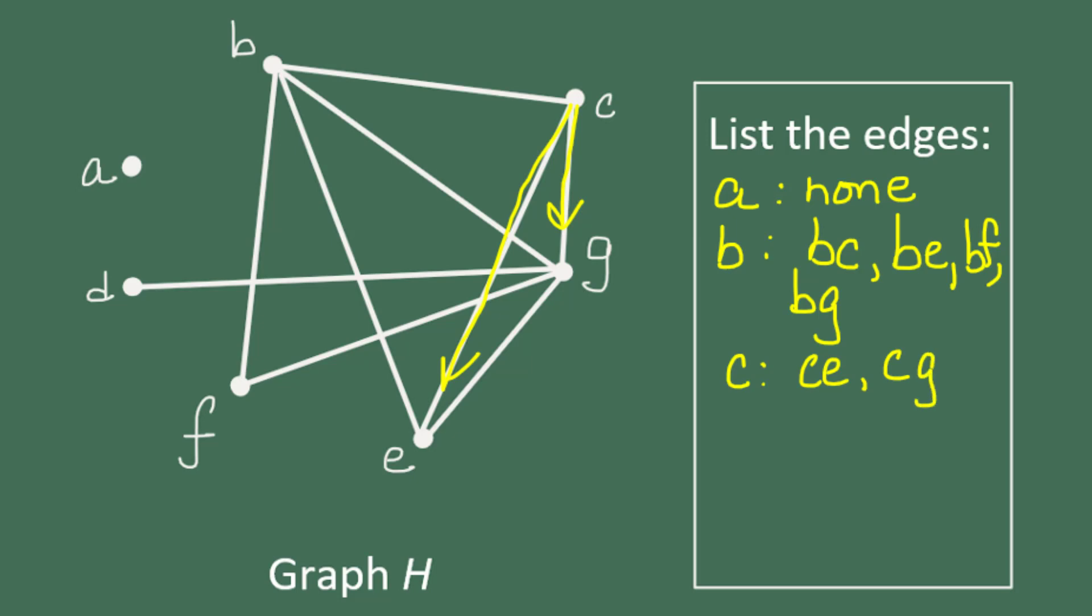Now I'm done with all of the potential edges that would have a vertex of C. And now I'm going to look to D. We always have to go forward in the alphabet. So we're going to look at E, which comes after D. Is there a connection between D and E? No. So we're not going to list DE. Then there's F, but there's also no connection there. And then there's G, which is the only one that we need to list. D does connect to G. All right.